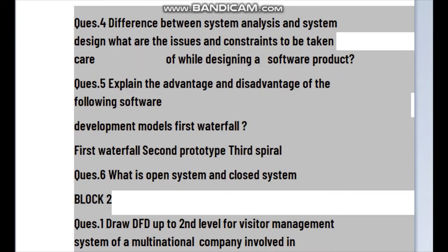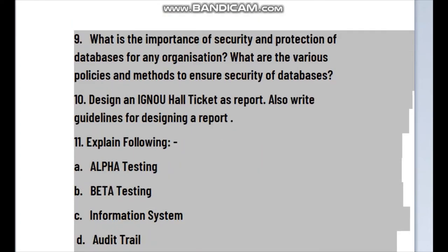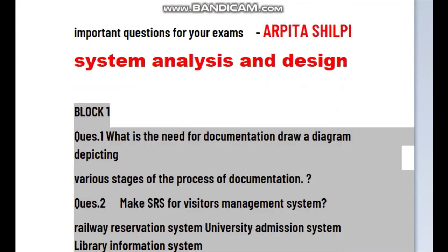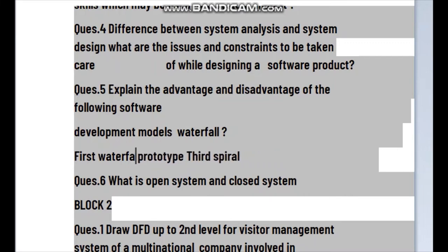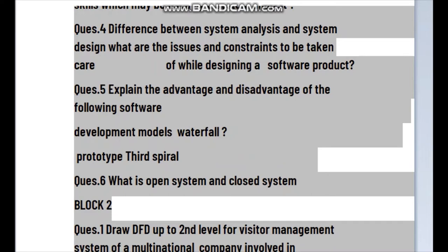The question asks you to explain the advantages and disadvantages of development models. The first is the Waterfall model, the second is Prototype, and the third is Spiral. For the advantages of the Waterfall model: it is suited for smaller projects because it does not work well on big projects. It should perform quality assurance tests before completing each stage, and each phase must be completed before the next phase of development begins.